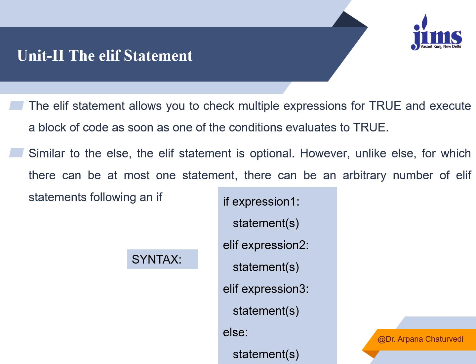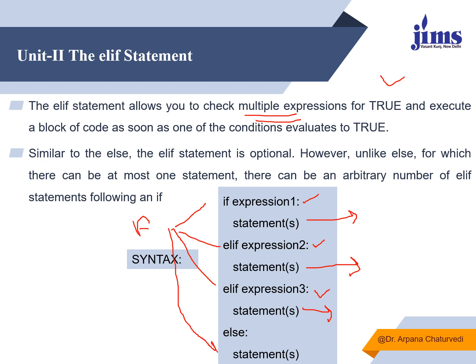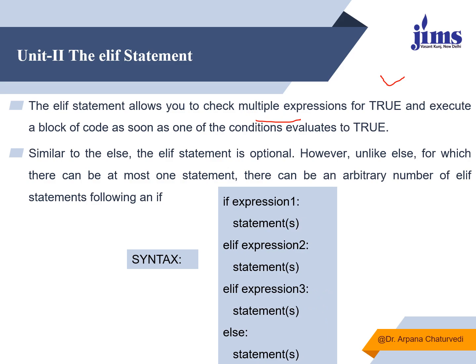Now we see how to use `elif` when you have more than one condition to check. If expression one is true, that statement executes; otherwise it goes to the next `elif` — if that expression is true it executes its block; otherwise it checks the third expression. If all three are false, it goes to the `else` block. This is the benefit of `elif`: you can check multiple conditions in one go, and if any one is true, action is taken accordingly.